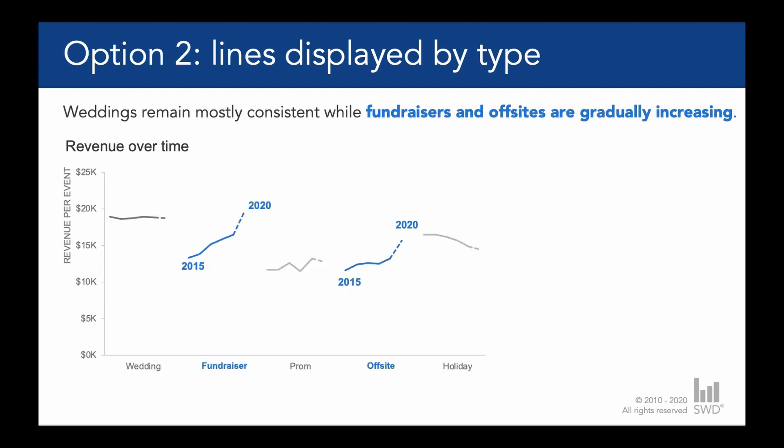Let's shift now to option number two, which is lines displayed by type. We can pretty easily refer to one given type, such as fundraisers, and track its revenue trend over time. One thing we lost compared to our previous view was a sense of comparison by year. For example, if I asked you to compare 2020 data with this view, you'd have to go to five different places in this graph — these data points are not all lined up in the same place, so the comparison is just harder.